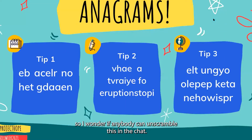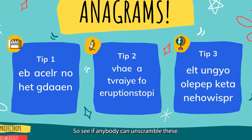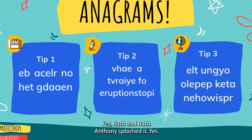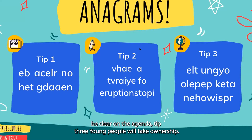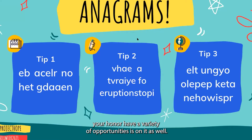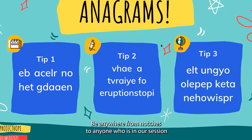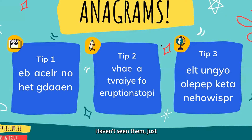We've got some anagrams — can anybody unscramble these in the chat? It's usually a bit of a battle between young people and adults to see who can get there quick enough. Ruth and Tunita smashed it! So: tip one — be clear on the agenda; tip three — let young people take ownership; and have a variety of opportunities. Two of these anagrams were from last year, so anyone in our session last year had an advantage on tips one and three.